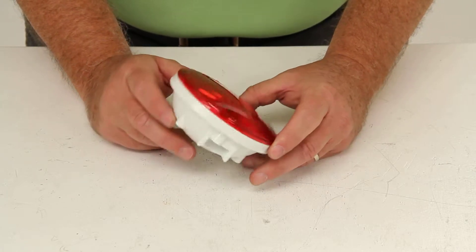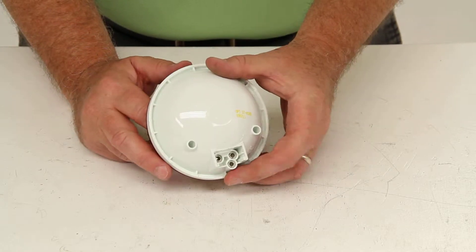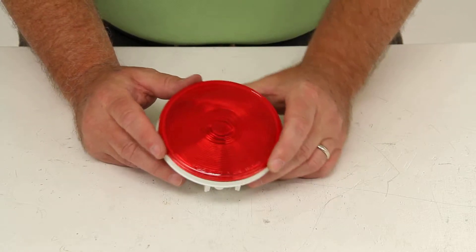This is a flush mount light. This is a sealed, round, combination, stop, turn, and tail light.